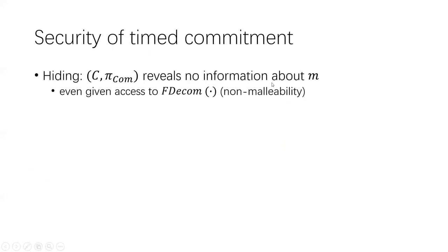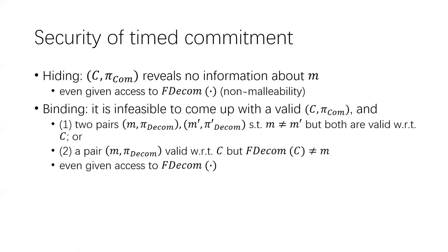The security of timed commitment schemes has two notions. Hiding means that what the receiver sees in the commitment phase — the commitment and the commitment proof — should reveal no information about the message. We also require the non-malleability property: the commitment and commitment proof should reveal no information about the message even given access to the forced decommitment oracle. The binding property says it is infeasible to produce a valid commitment with two pairs of messages and decommitment proofs where the messages are different but both valid with respect to the commitment.